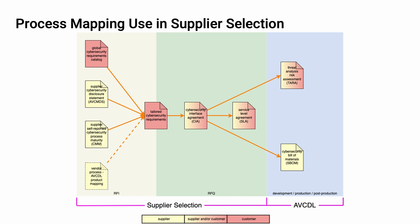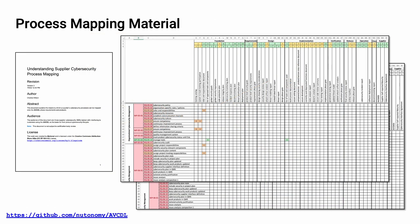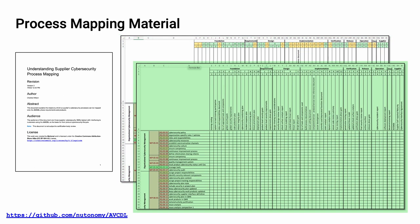Process mapping ensures that both parties are on the same page. There are three documents within the AVCDL document set that support the creation of the supplier processes to AVCDL requirement product mapping: the understanding supplier processes mapping elaboration document, the 434 REC to AVCDL product sheet of the vendor process to AVCDL product mapping template spreadsheet workbook, and the 434 REC to vendor process sheet of the vendor process to AVCDL product mapping template spreadsheet workbook.